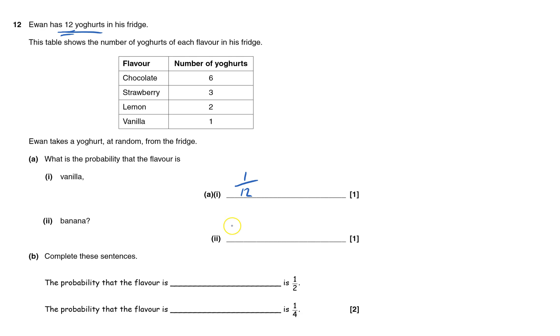For banana, there's no bananas, so that would be 0 out of 12. That's the same as zero probability, but you get the marks for writing 0 out of 12.